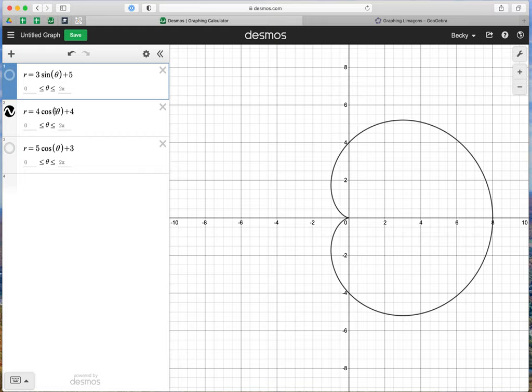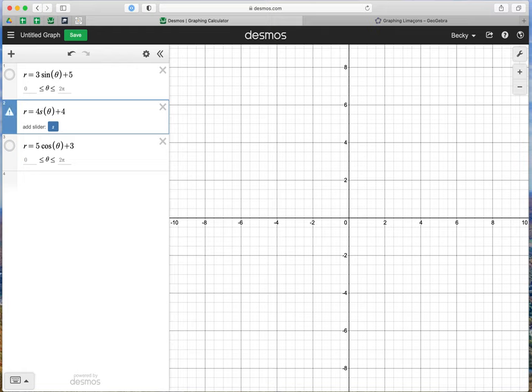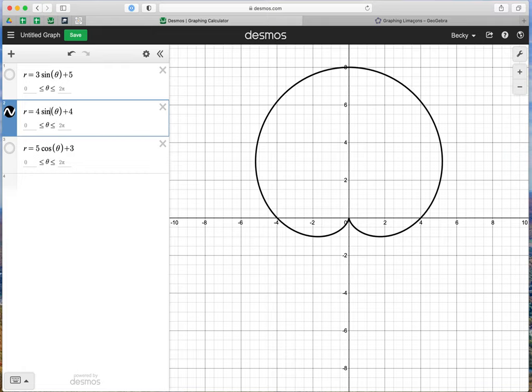We have 4 cosine theta plus 4, let's make that 4 sine theta plus 4. So we predict that now it would be vertical with the majority of it above the x-axis, which is what we get. We have that same cardioid, but now it's vertical.